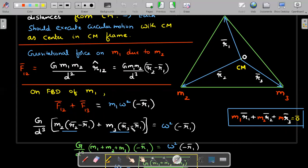And F13, I'll just replace two with three and G by D cube would be taken common. And on either side, M1 will exist and I've canceled that M1. So I've made some manipulations here.